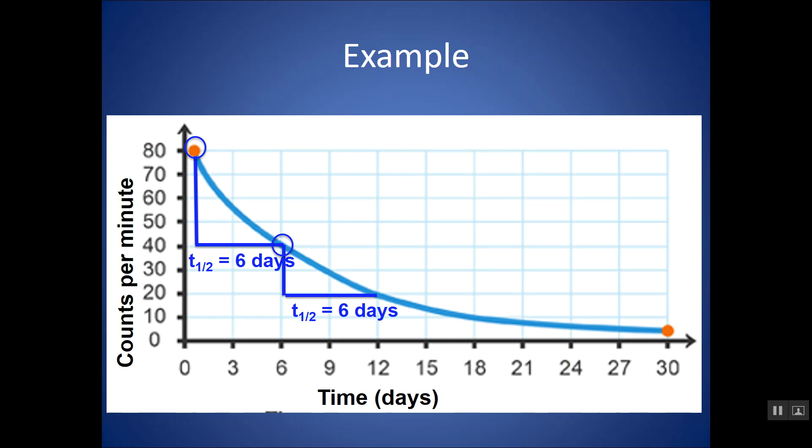If you have a correct graph for a first-order decay, which is what radioactivity is, you should be getting a relatively constant half-life given some experimental error.